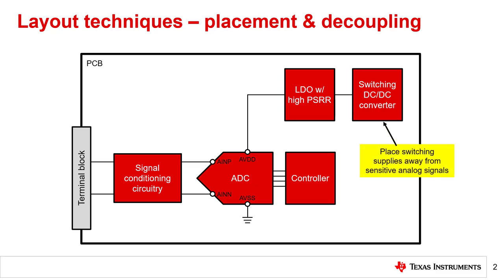One specific layout optimization is to isolate switching noise by placing switching regulators away from sensitive analog inputs. Switching regulators are great for their efficiency, but they can inject large transients on the supplies that couple into surrounding circuitry, including the ADC itself. If the power conditioning circuits are on the same side of the PCB as the signal chain components, the return current should never have to flow through the more sensitive analog circuitry.